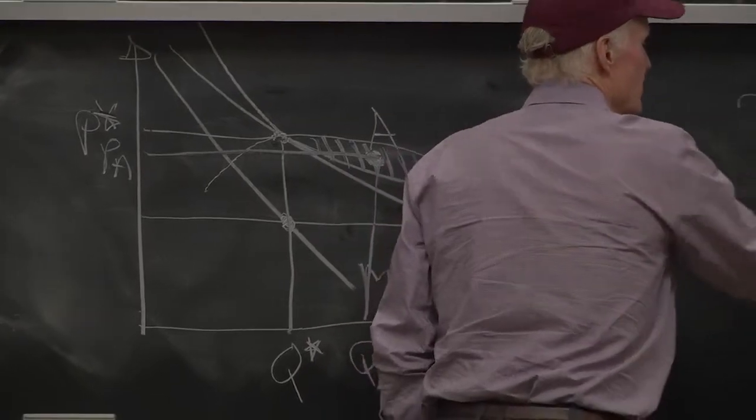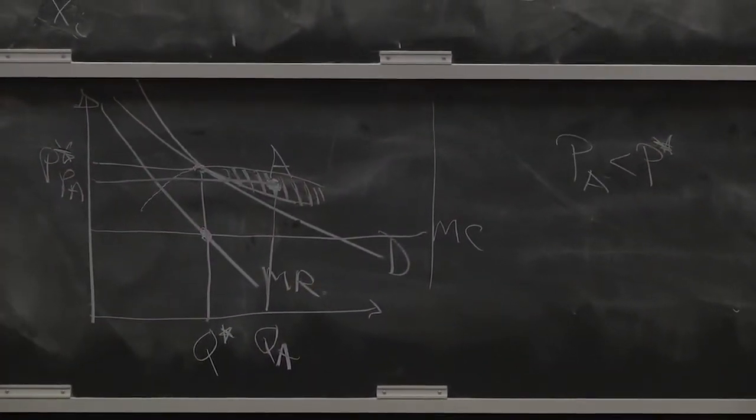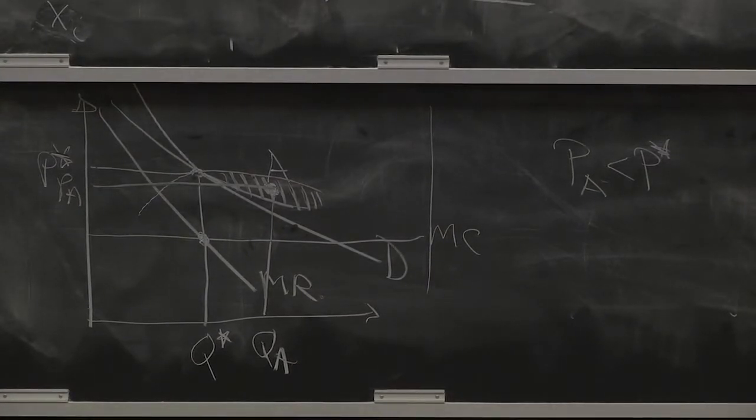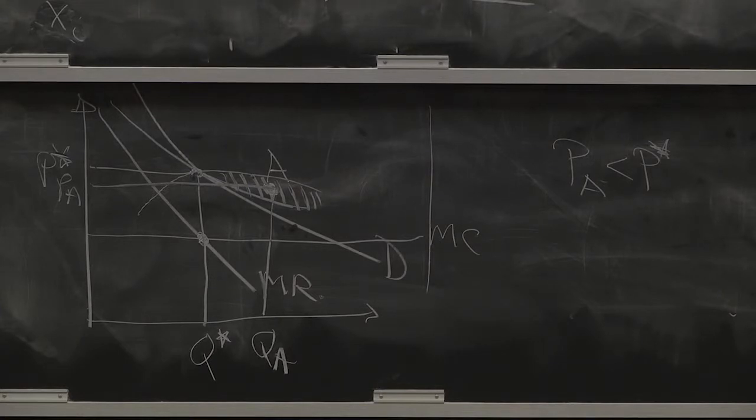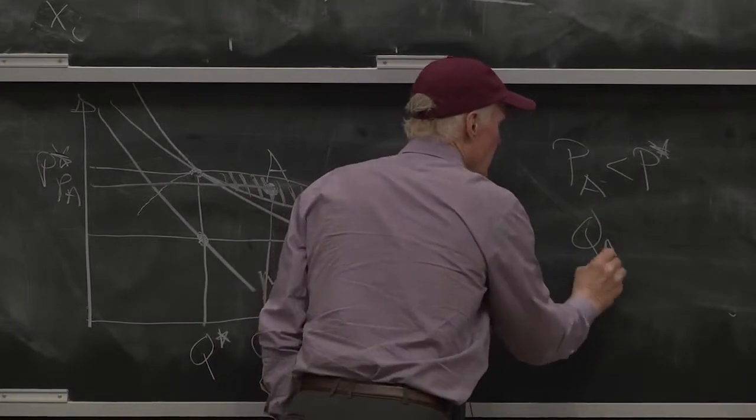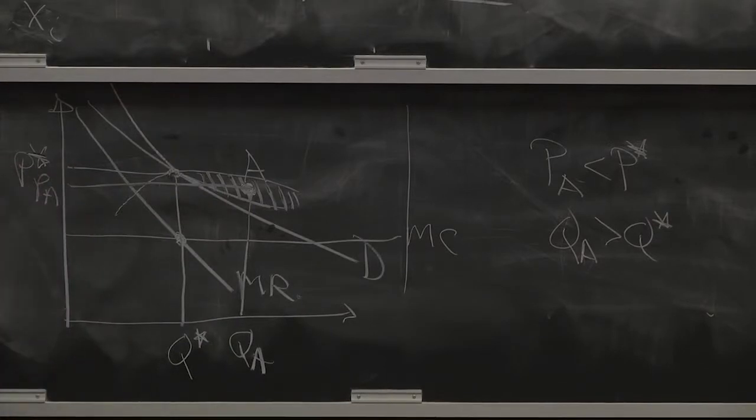First off, P-A is less than P star. That's all the points out there always have that property. They always involve a lower price than this monopoly price. What else? Q-A is bigger than Q star. That is, they involve more quantity.